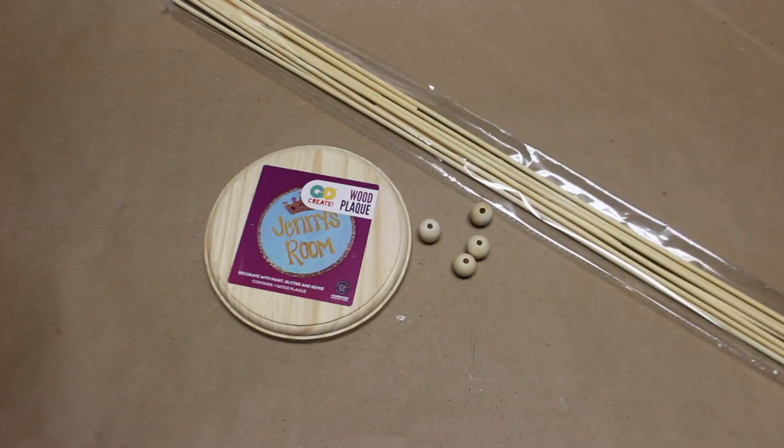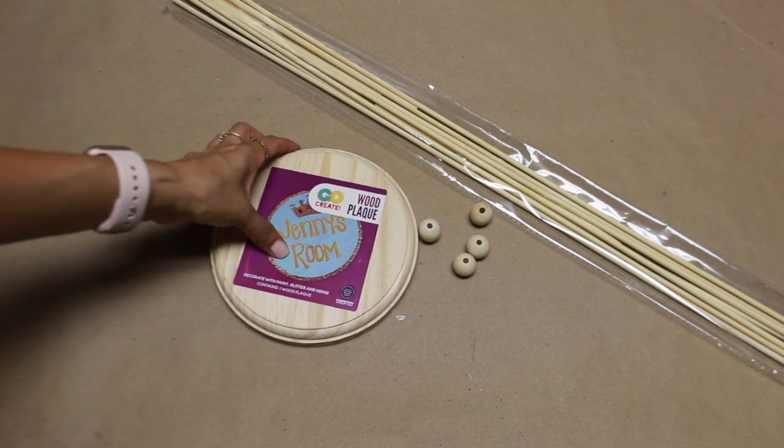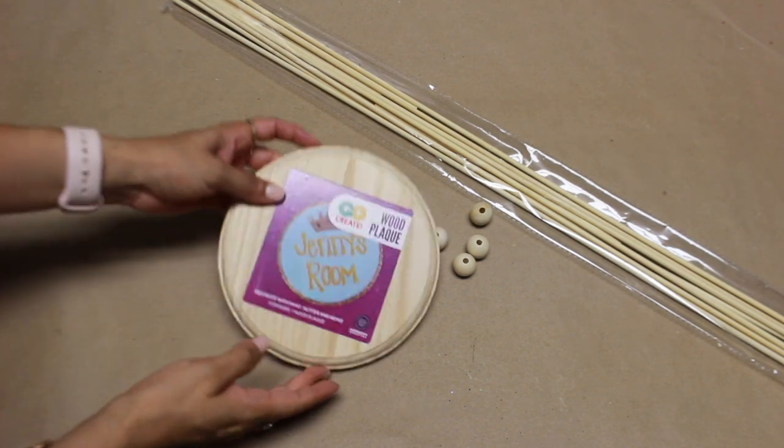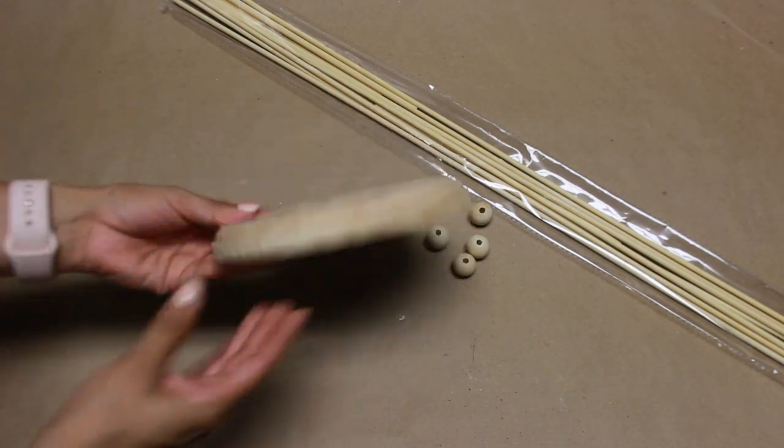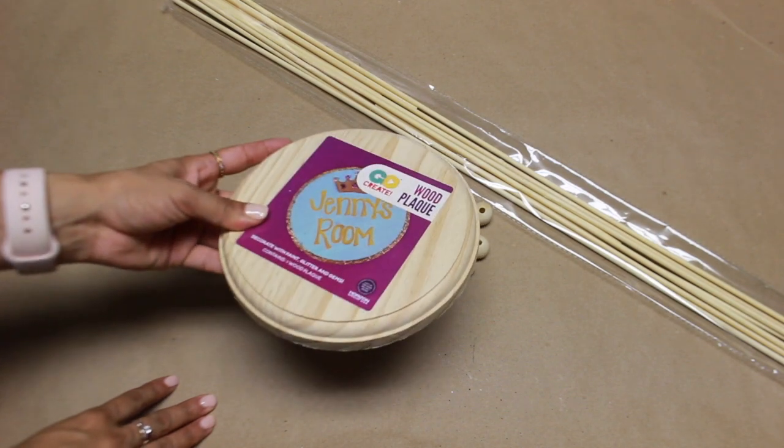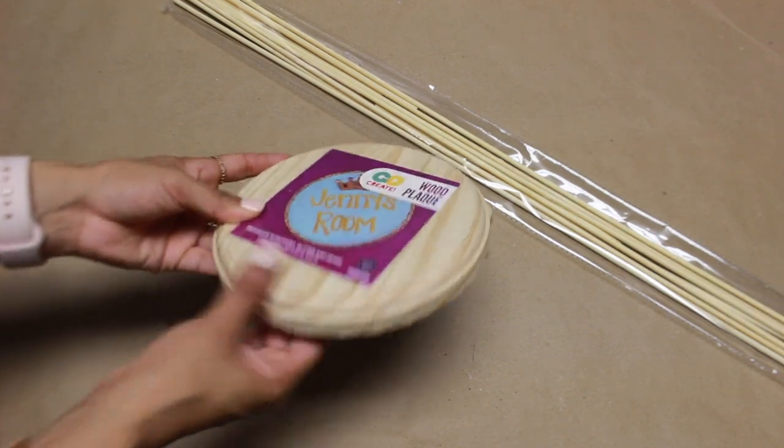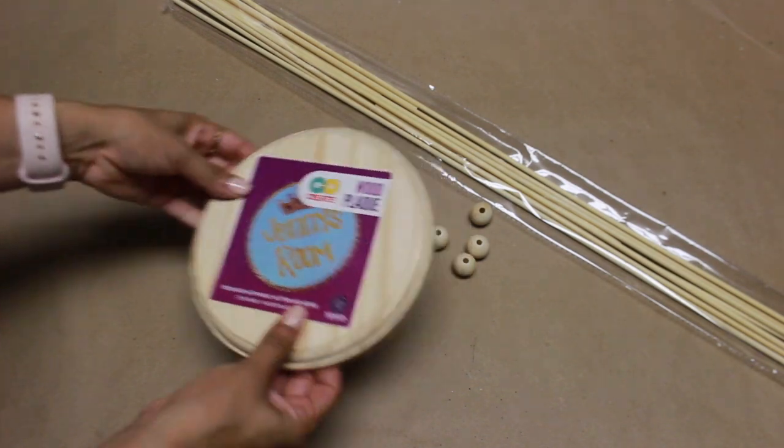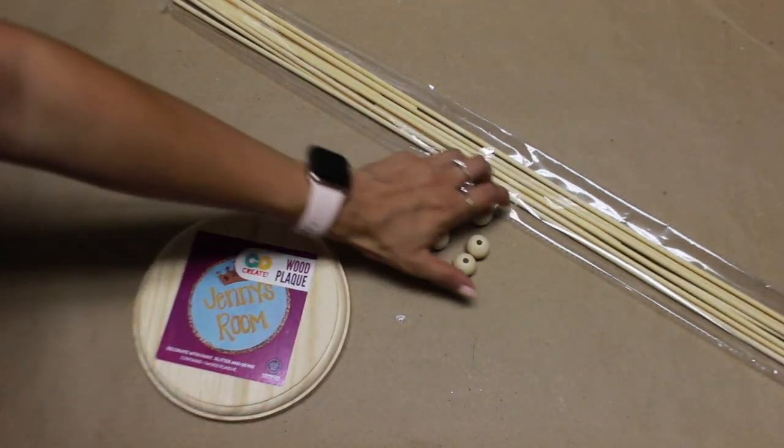For the fourth and final DIY, I am using this wood plaque from Walmart. This one was about $1.98, I believe a little under $2. Now they do have a smaller, more thinner one. That's a dollar. If you can find that one, I just picked this one up. And then I have some beads.